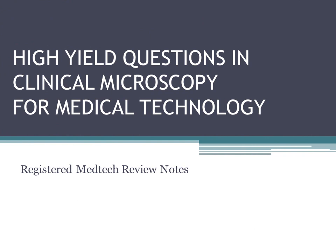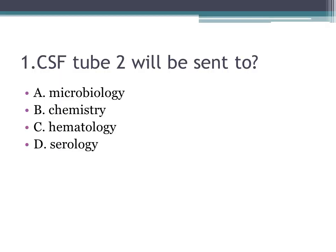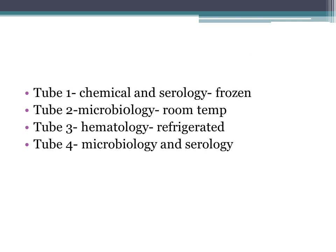High yield questions in clinical microscopy for medical technology. Number one: CSF tube 2 will be sent to A. microbiology, B. chemistry, C. hematology, D. serology. The correct answer is A, microbiology. Tube one is for chemistry and serology — if stored, it should be frozen. Tube two is for microbiology, stored at room temperature. Tube three is hematology, should be refrigerated.